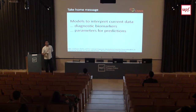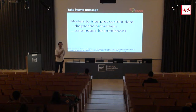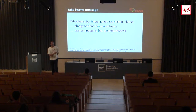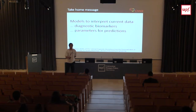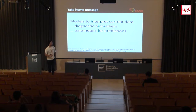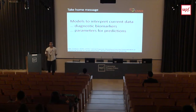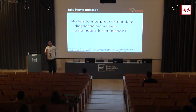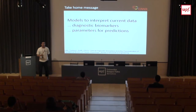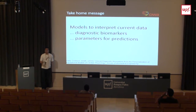The take-home message about computational modeling is that models allow us to do two things, illustrated by the analogy of weather forecasting: first, the explanatory value — understanding why events happened; second, the predictive value — forecasting what will happen. The speaker's motivation as a researcher is to focus more on the explanatory value to improve clinical decisions, rather than rushing to prove the predictive aspect of models.